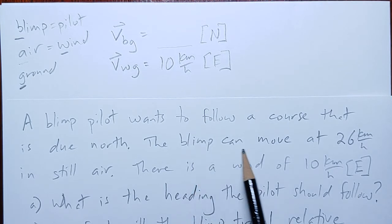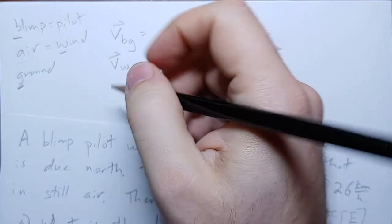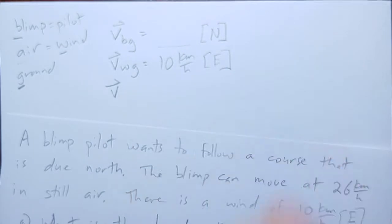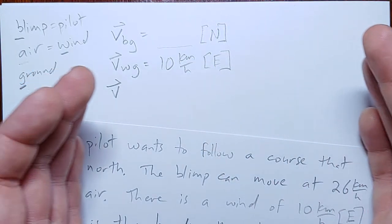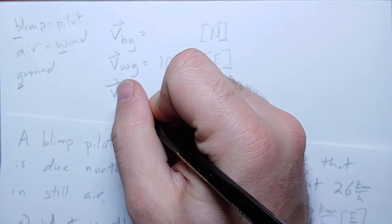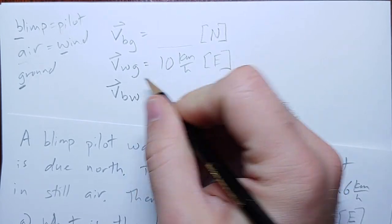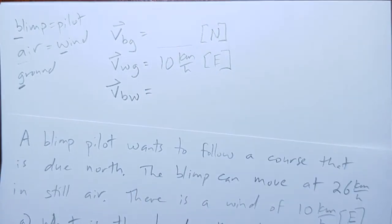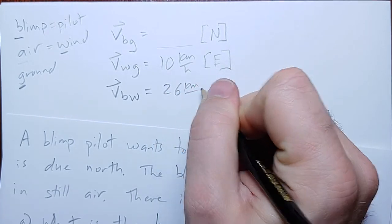I missed a piece here. The blimp can move at 26 kilometers an hour in still air. So, that means that the velocity of the blimp relative to air, which, of course, the wind is just a moving chunk of air. And so, whether we're talking about relative to the air or the wind, it's the same thing. So, the velocity of the blimp compared to these, since I'm using W, how fast the blimp moves through the air or how fast the blimp moves through the wind is 26 kilometers per hour.